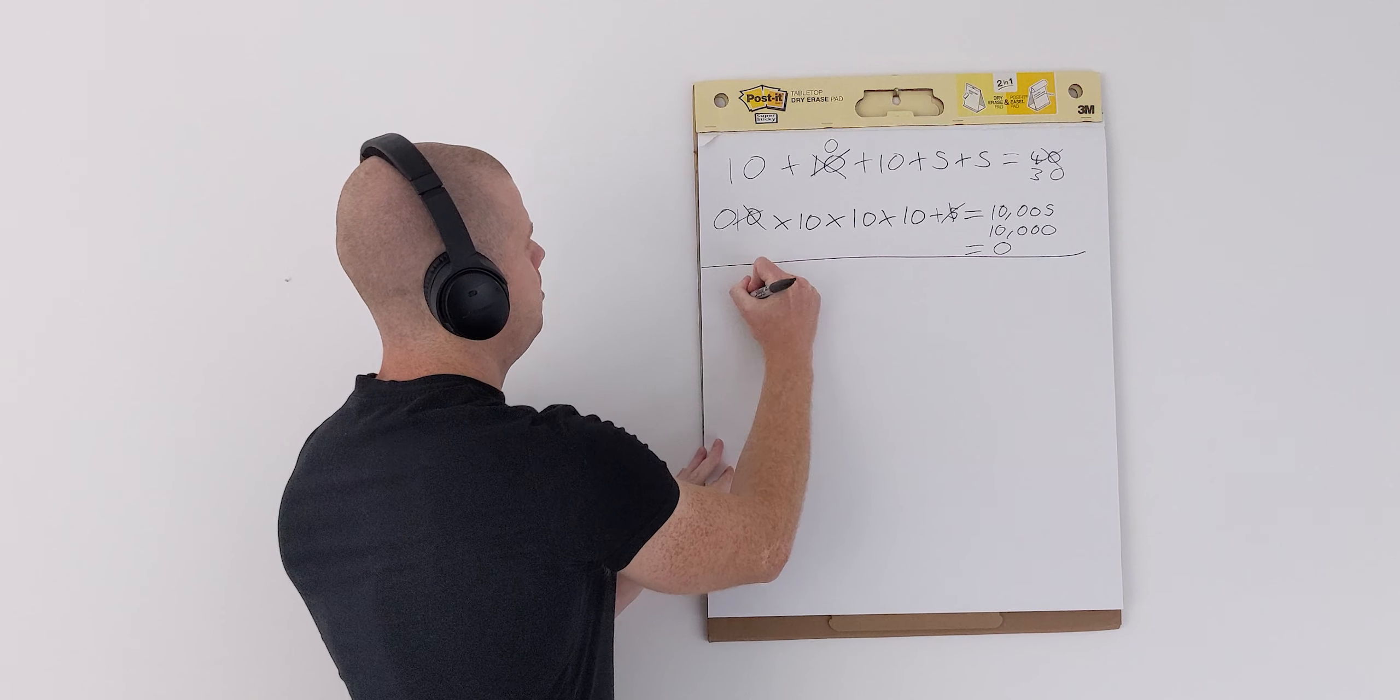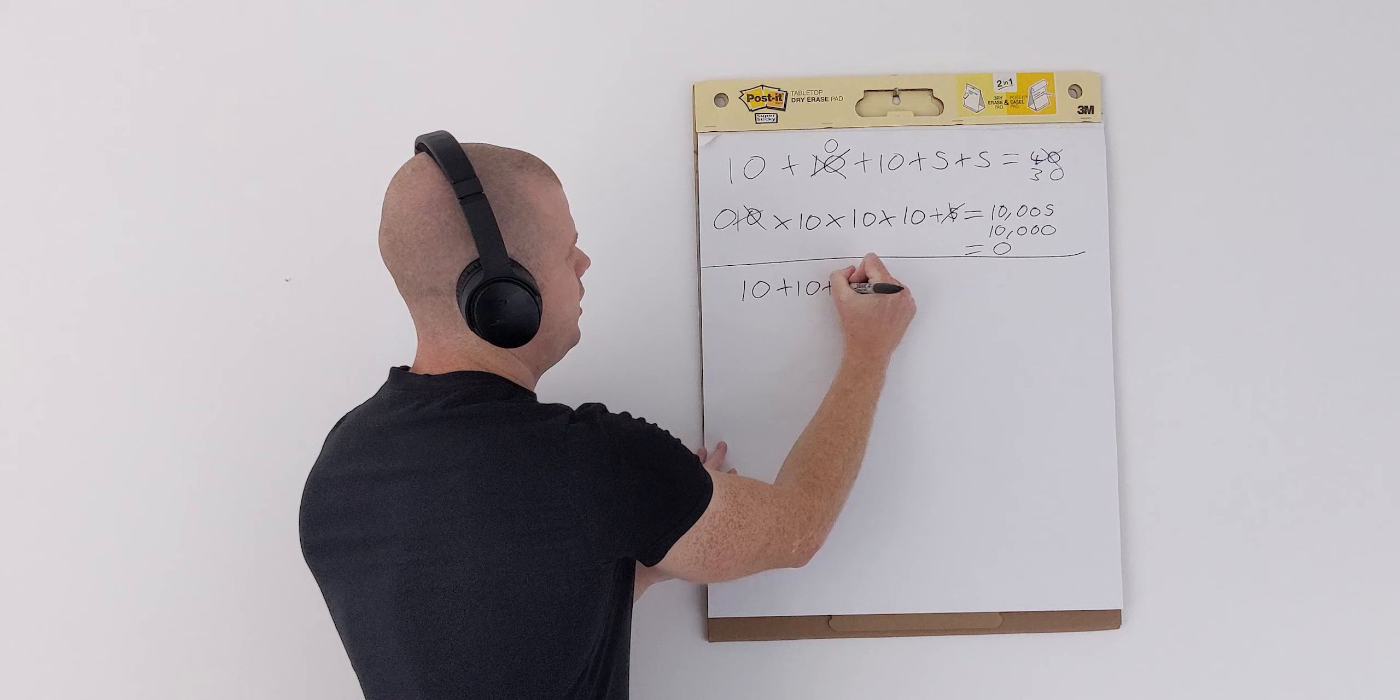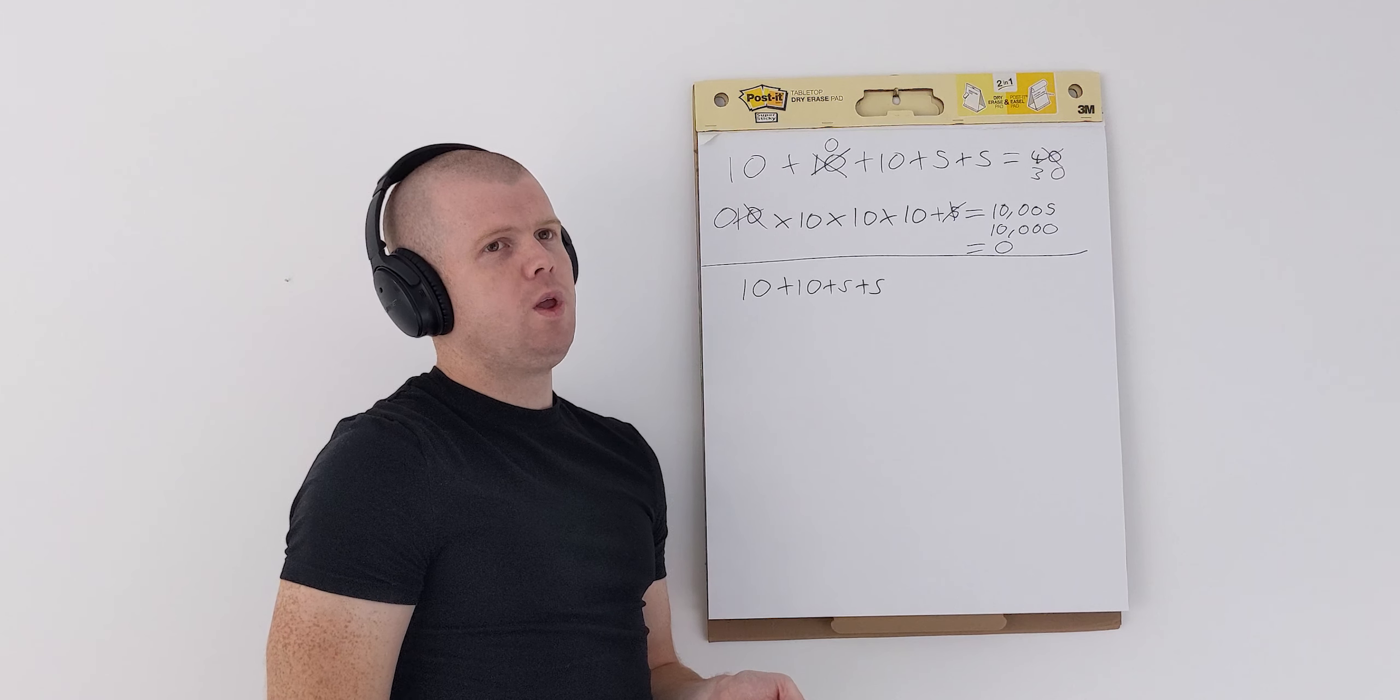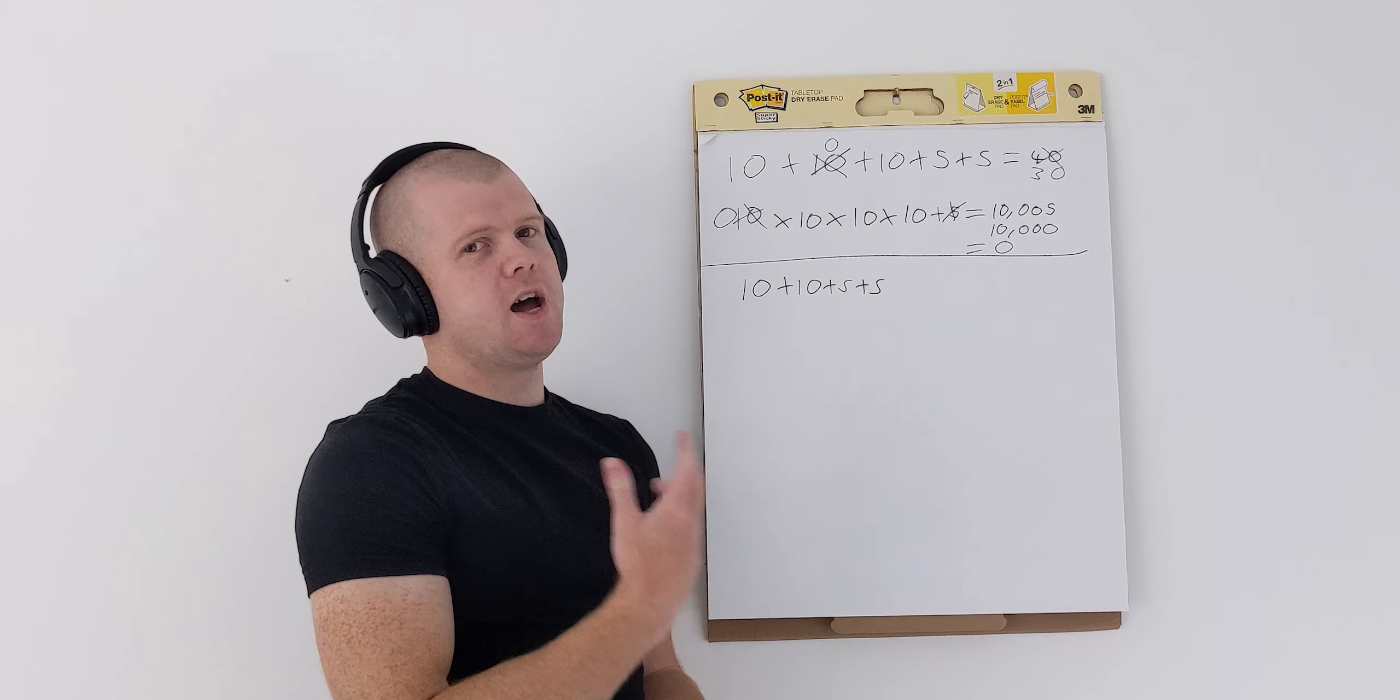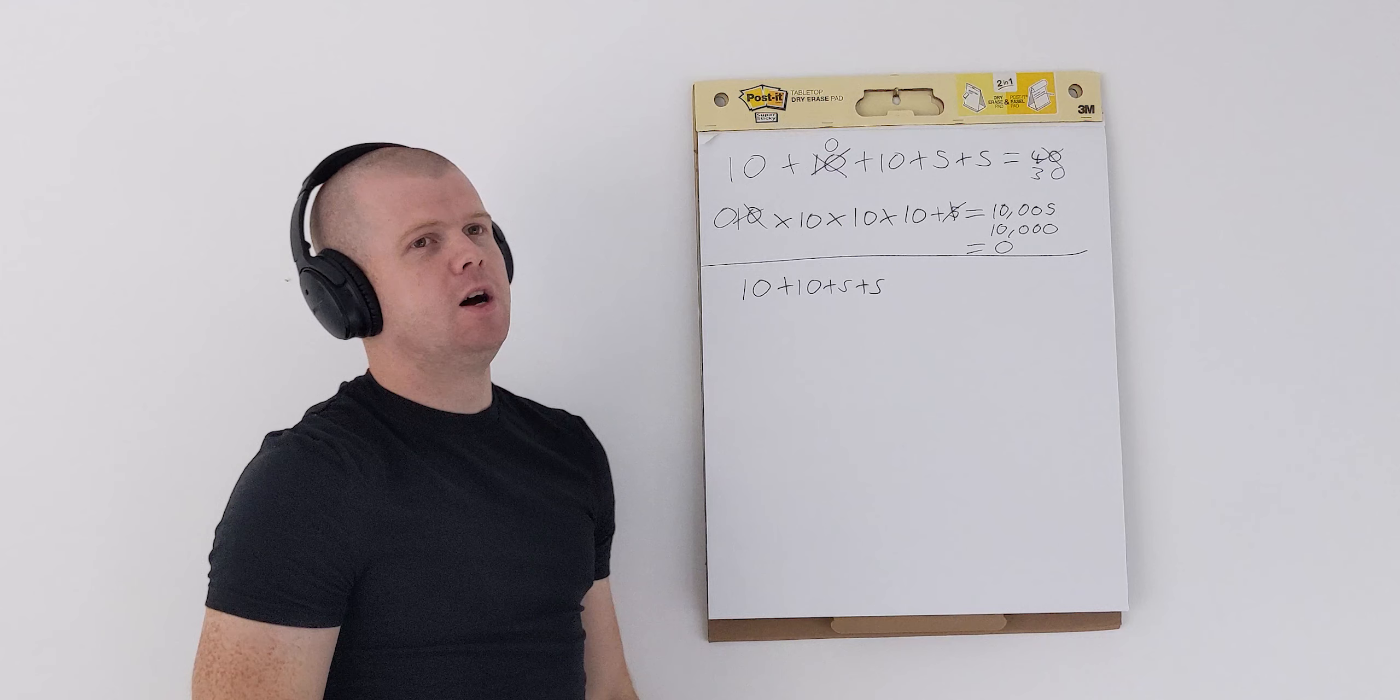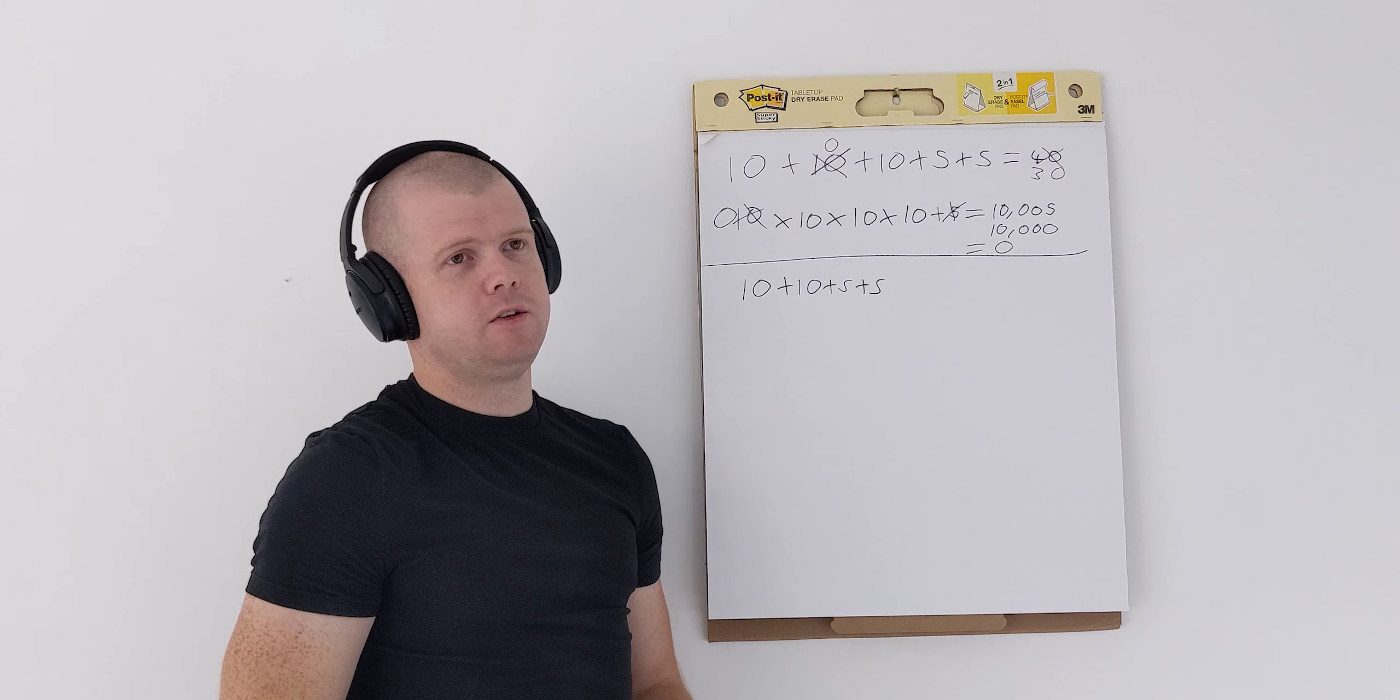So, currently, our party is at 10 plus 10 plus 5 plus 5. And if we want to introduce a multiplier, we can't have an additive mindset where we're just adding something more. So, hiring a clown, for example, that might give us another plus 10. But it doesn't increase the overall value of the existing system.